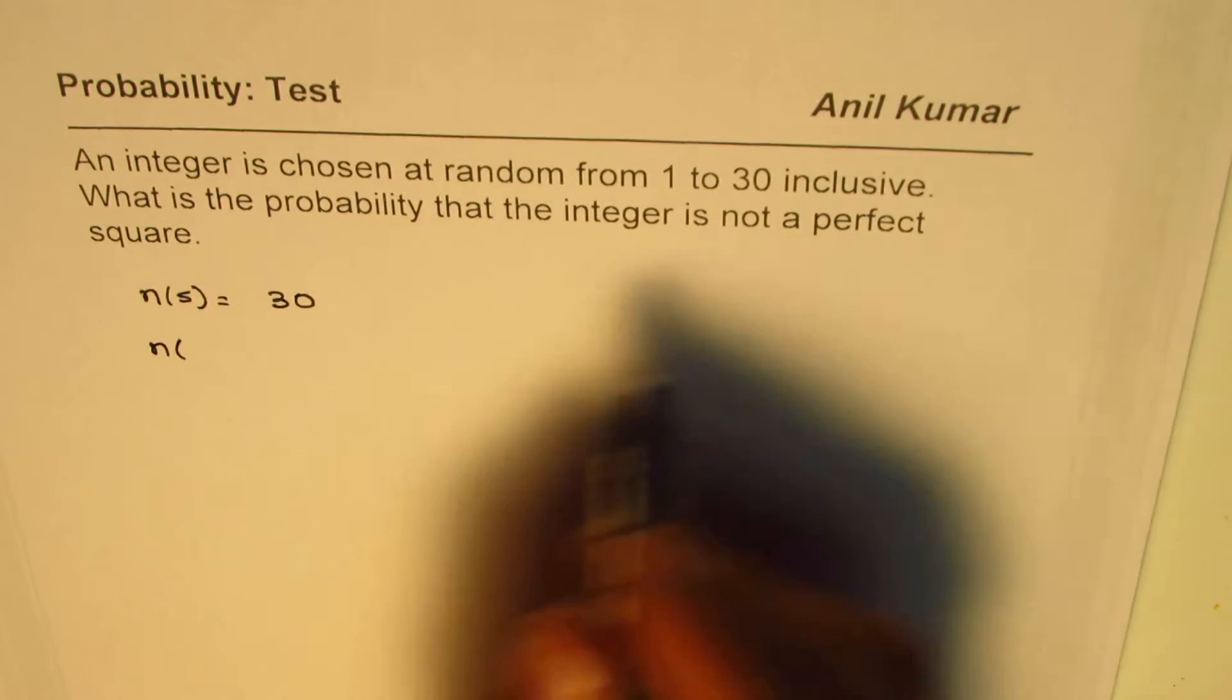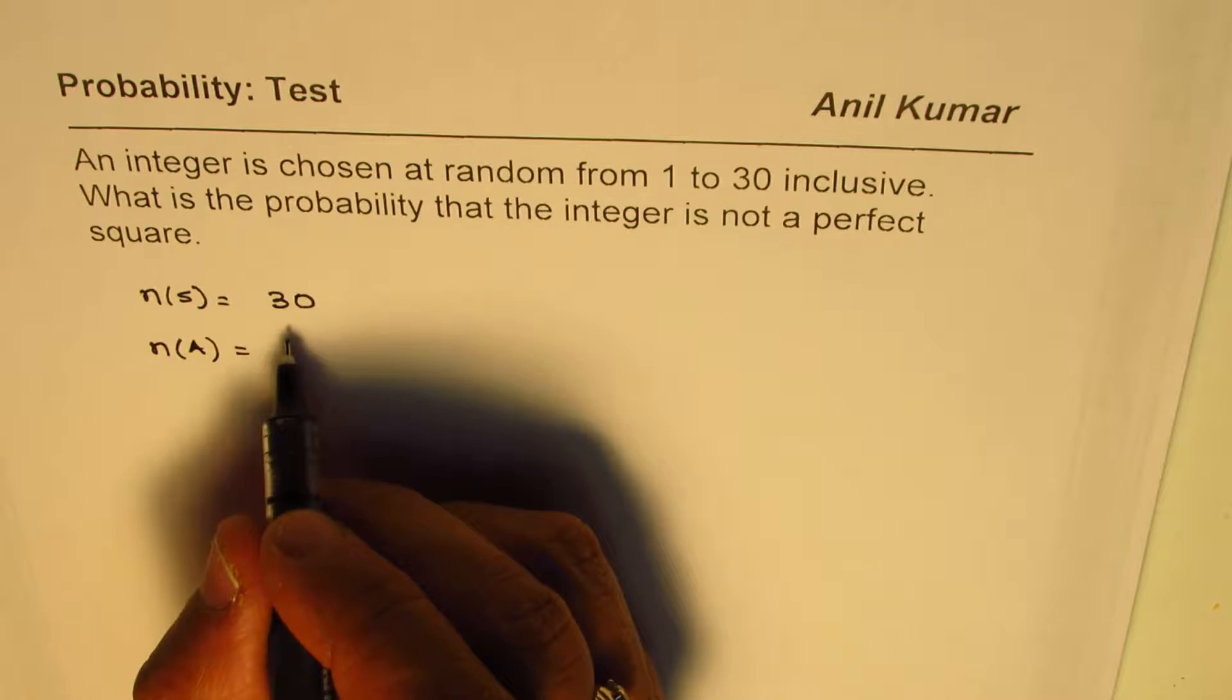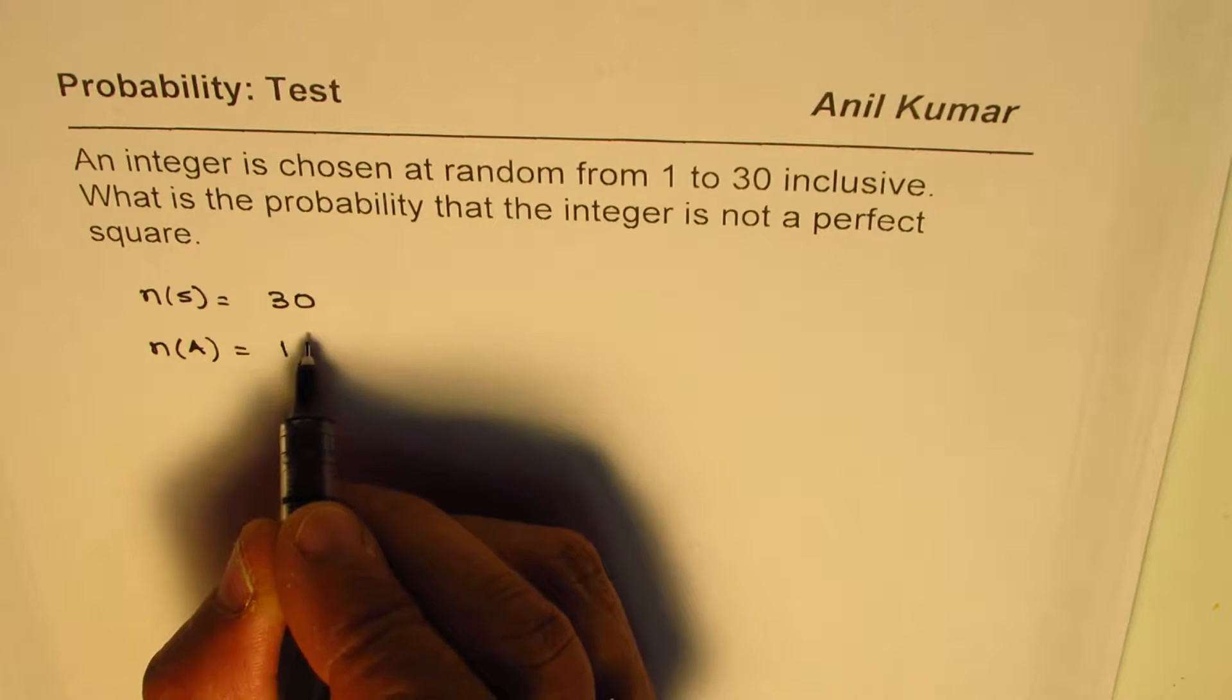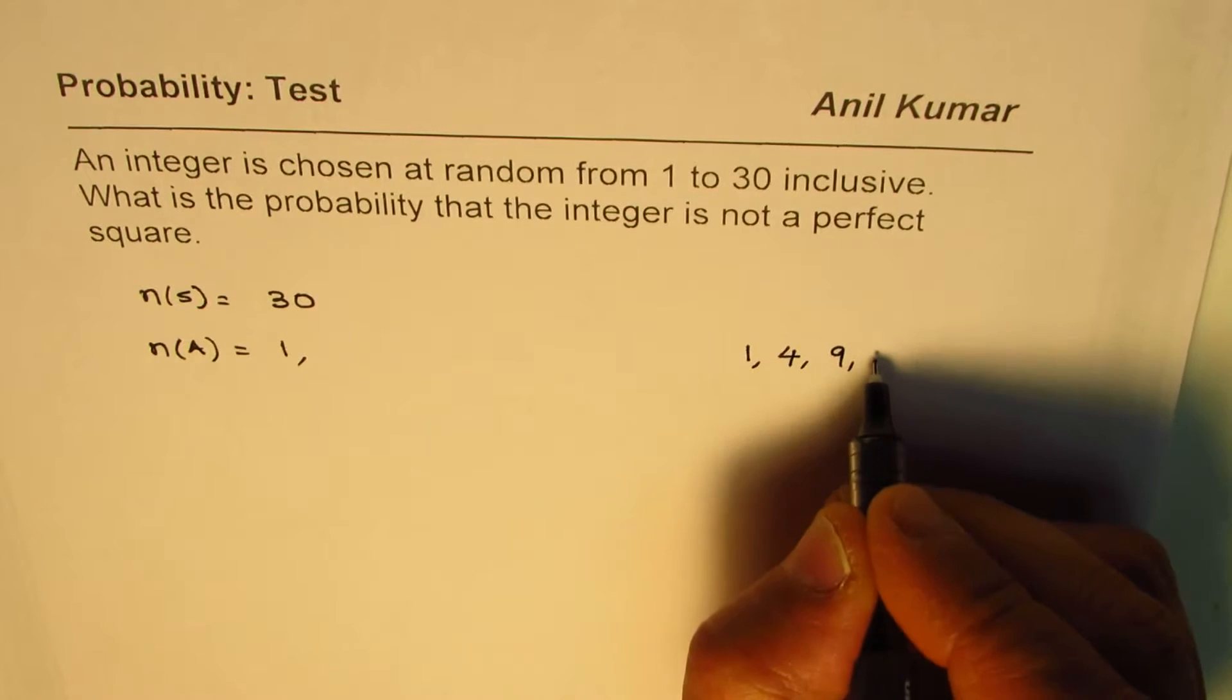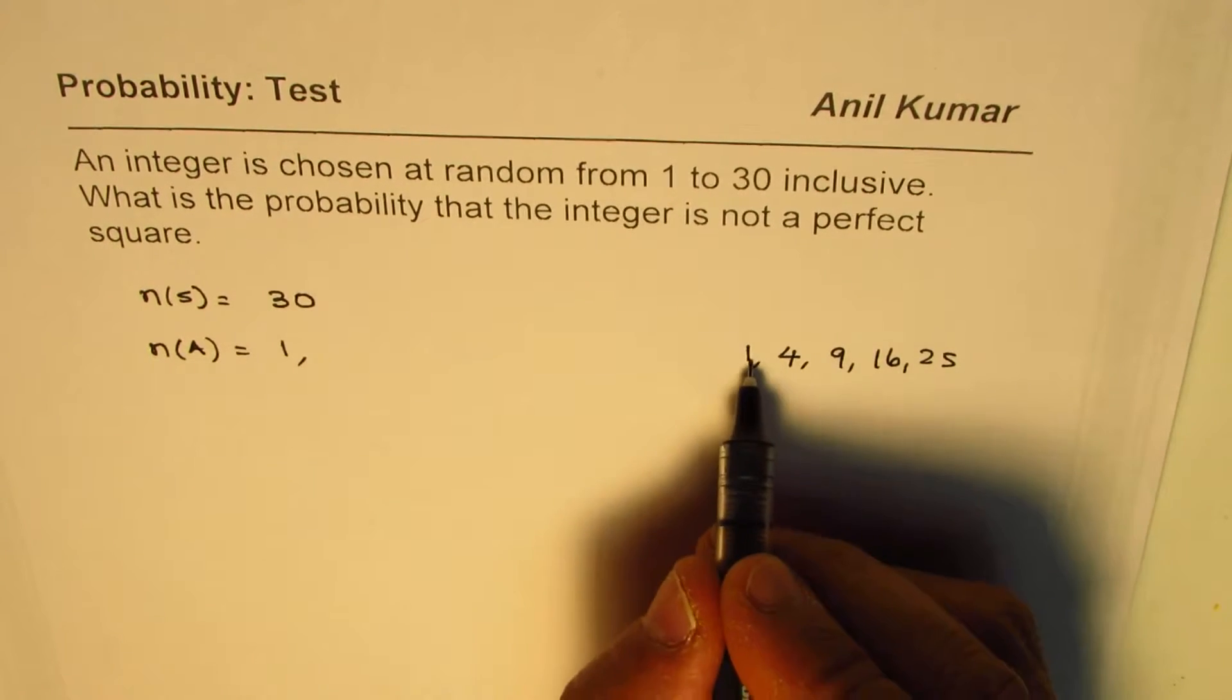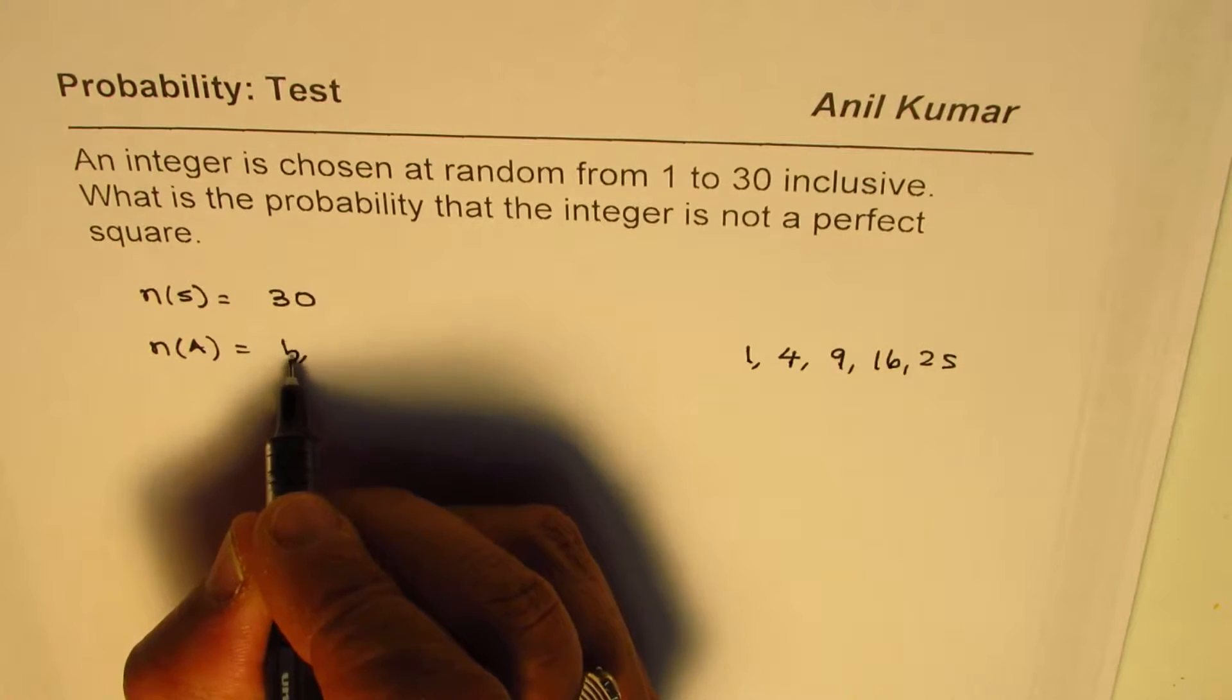Numbers which are perfect squares are: 1 squared is 1, 2 squared is 4, 3 squared is 9, 4 squared is 16, 5 squared is 25. So we have 5 numbers which are perfect squares.